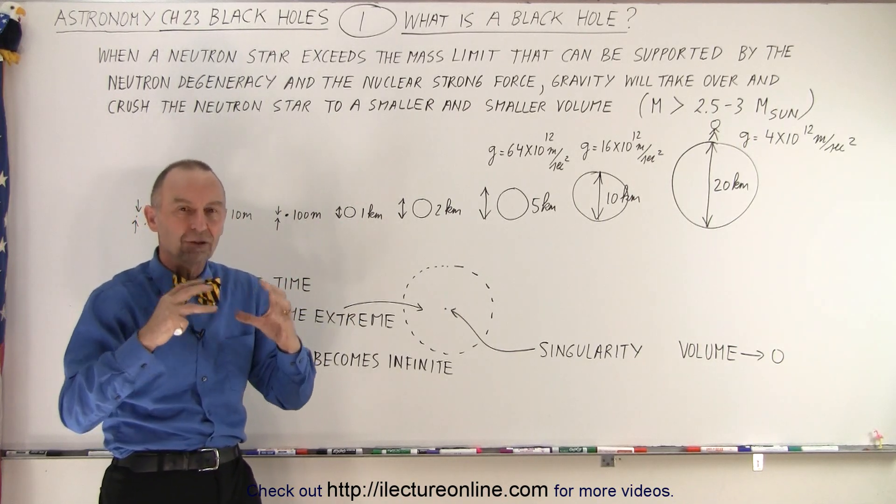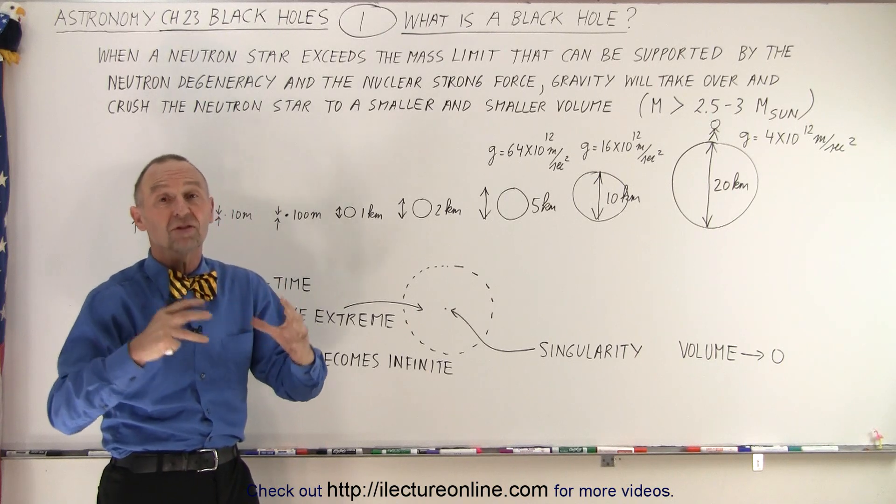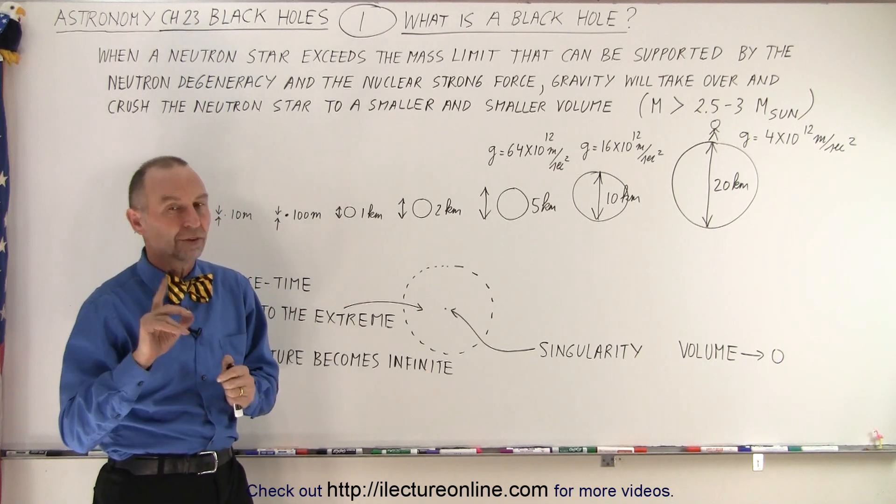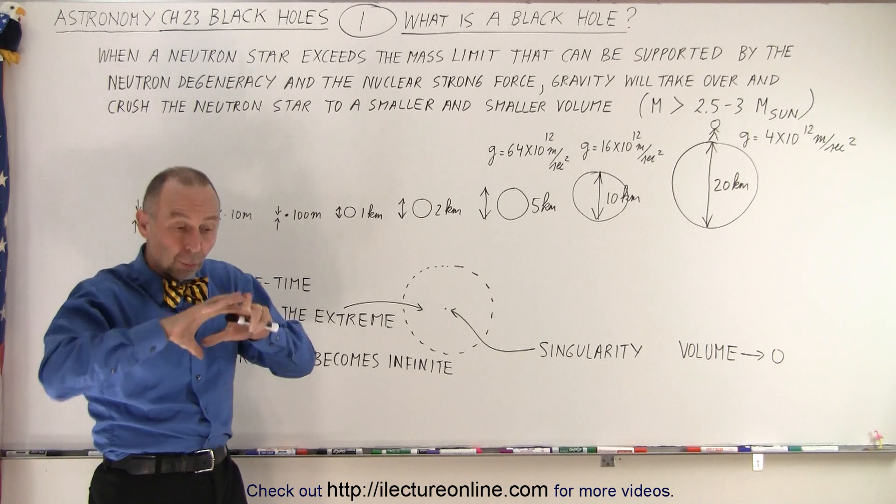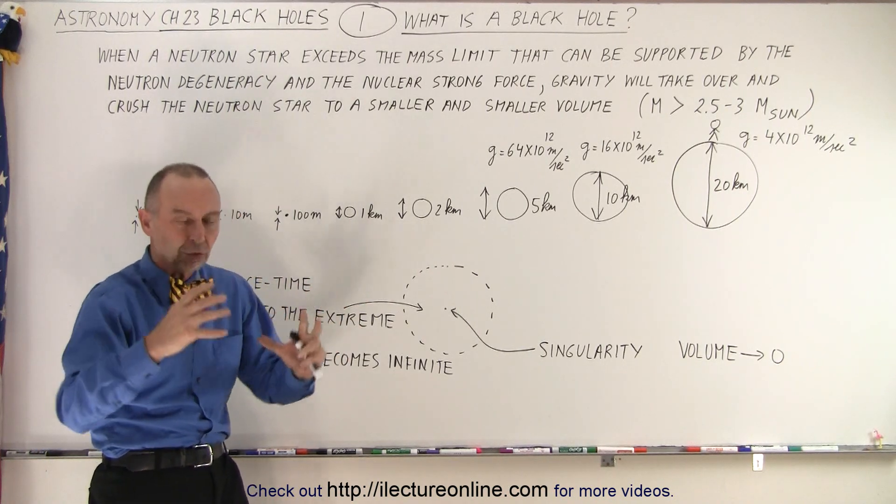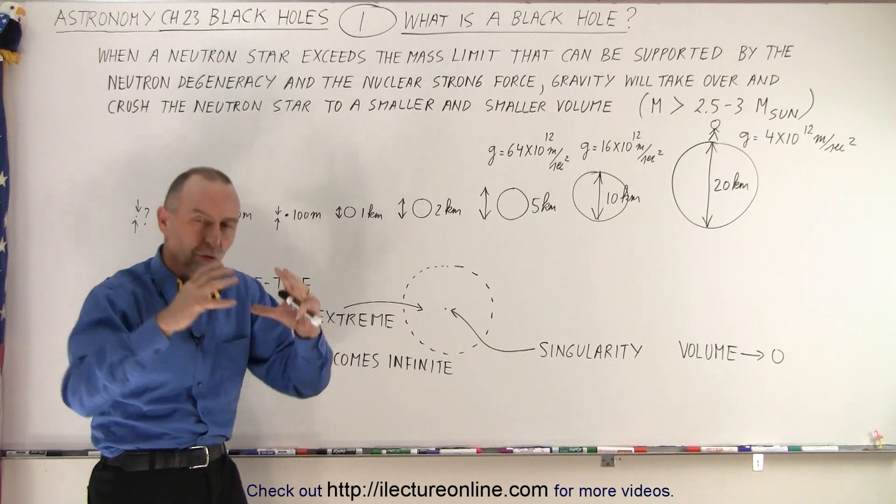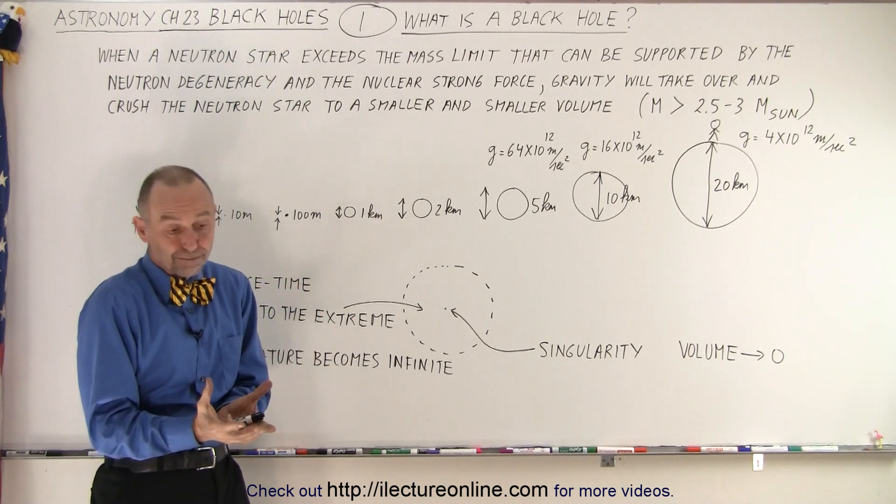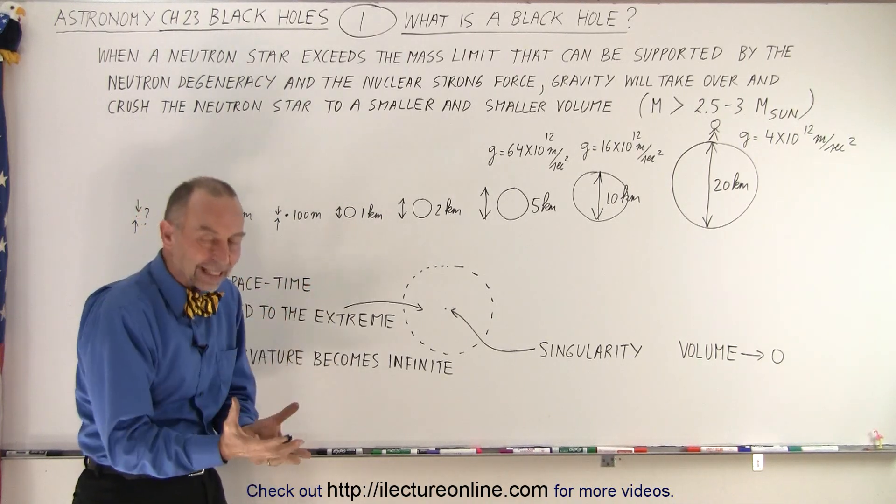A neutron star is the most dense material that can exist in the universe, besides a black hole. So what a neutron star is is simply a ball of nuclear material. Neutrons, protons, and electrons squished together to the most dense state that it can be in.